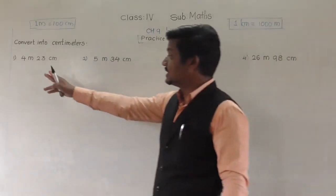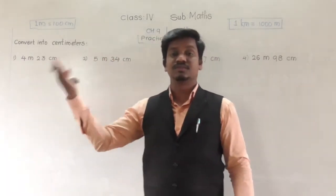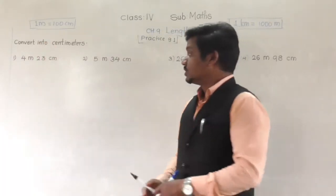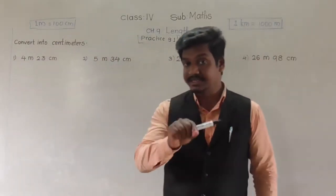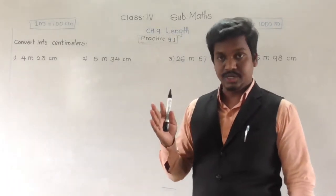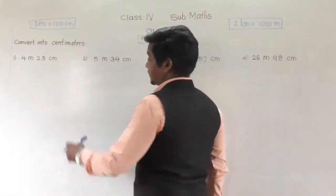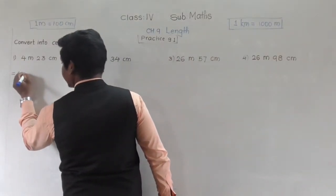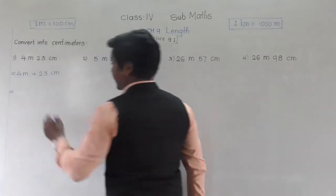See here — the lengths given in this question are in meters and centimeters, and we have to convert them into centimeters. The first one is 4 meters 23 centimeters. We have to convert it into centimeters, meaning all lengths should be in centimeters. So: 4 meters 23 centimeters means 4 meters plus 23 centimeters.